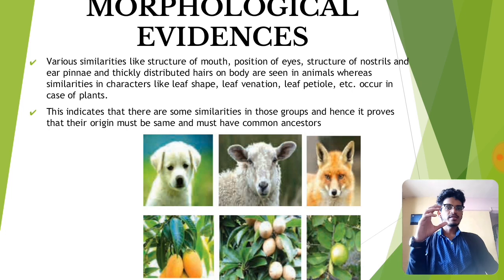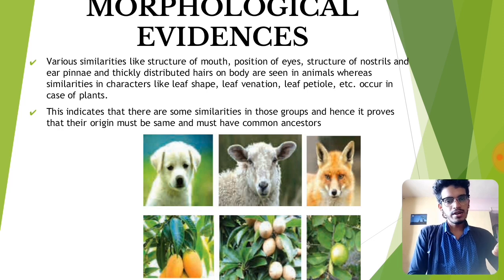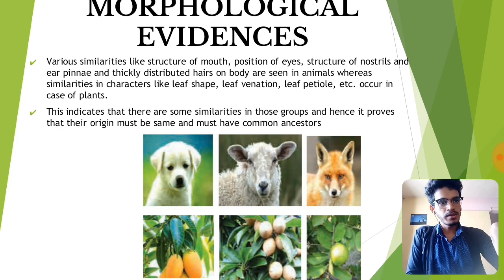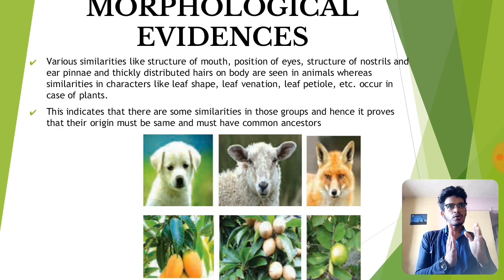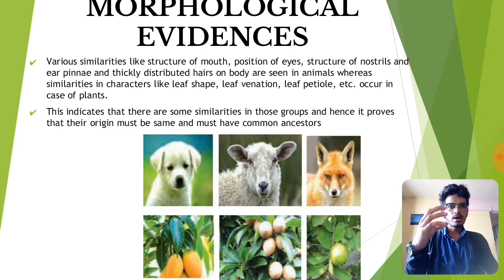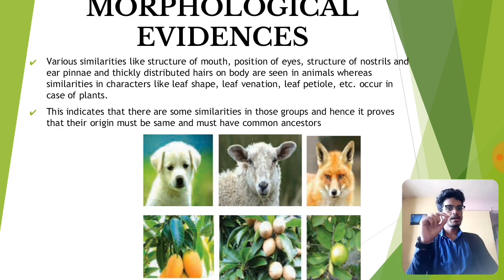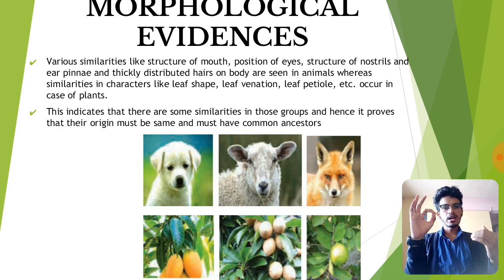Morphological evidences are also called external evidences — all the evidences which you can identify by observing an animal externally. We need to understand that all organisms had a common ancestor, and to prove this, we look at morphological evidence.